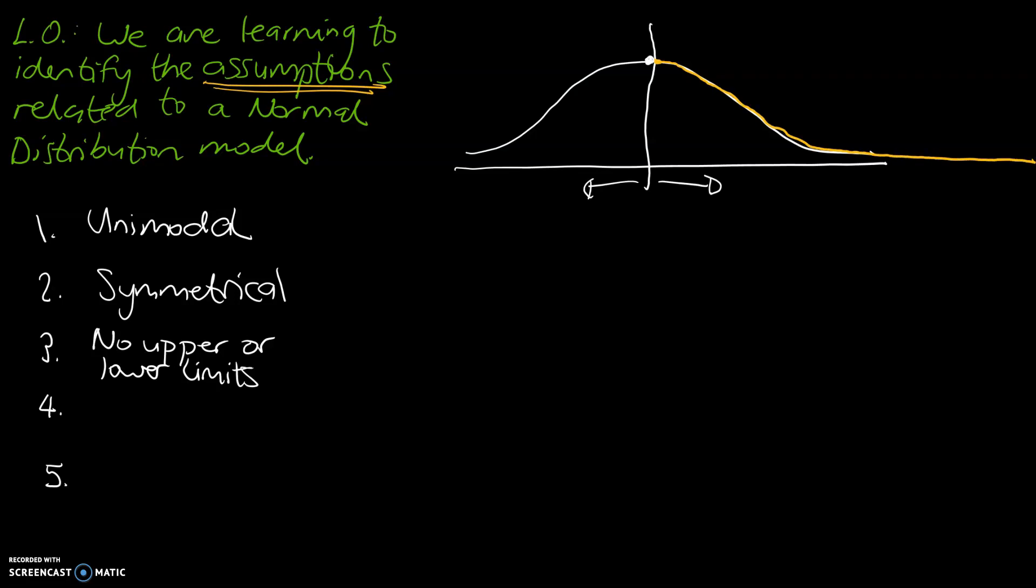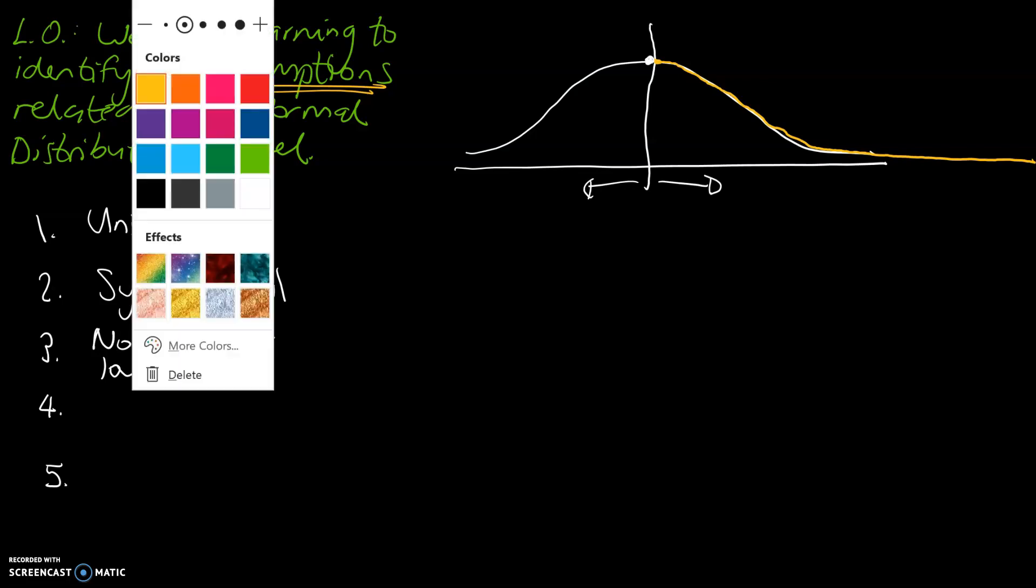It always becomes less and less and less likely, but it never becomes impossible. And that's why there is no upper or lower limits.